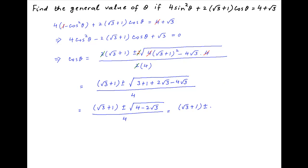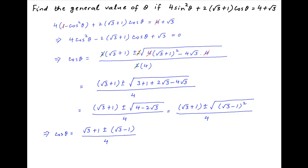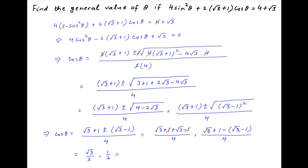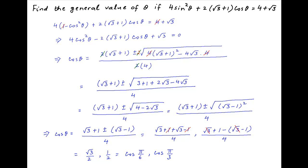The term inside the square root equals (root 3 minus 1) squared, so cos theta simplifies to (root 3 plus 1 ± (root 3 minus 1)) divided by 4. This gives either (root 3 plus 1 plus root 3 minus 1) divided by 4, or (root 3 plus 1 minus (root 3 minus 1)) divided by 4. In the first case the 1's cancel, and in the second case the root 3's cancel, giving cos theta equals root 3 over 2 or 1/2. Since root 3 over 2 equals cos(π/6) and 1/2 equals cos(π/3), the general solution is theta equals 2nπ ± π/6 or 2nπ ± π/3.